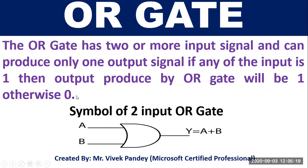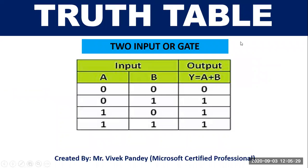Symbol of a two-input OR gate: if we input A and B into the OR gate, then our output will be A plus B. In the truth table of the OR gate, if any of the inputs is one then the output is one; otherwise zero.